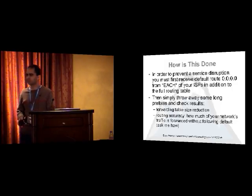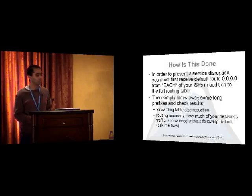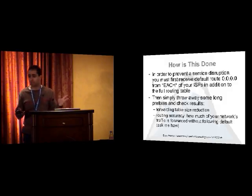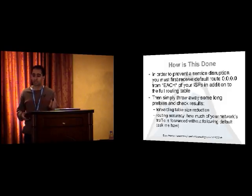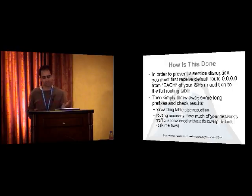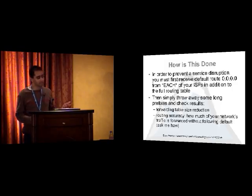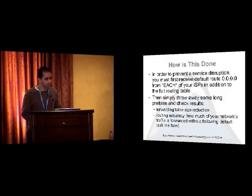So, how is it done? The very first thing you must do is make sure all of your ISPs, in addition to the full table, are sending you a default route — because there will be some traffic you no longer have in your forwarding table and you don't want to disrupt those users. Make sure it's not just one ISP. All of your ISPs should send you defaults, so that when one ISP goes down you don't get calls saying a cable modem provider can't reach your server. Then you throw away some of the long prefixes and check your results — how much did I reduce my routing table, am I happy with it, and how accurate is my network?